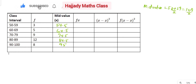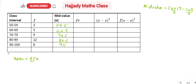Looking at our frequency — don't forget that to calculate the mean for grouped data, our formula is summation of fx over summation of f. So we need to know the summation of our frequency: that is 3 plus 5 plus 9 plus 12 plus 8, and that gives us 37.